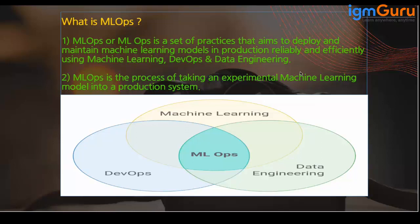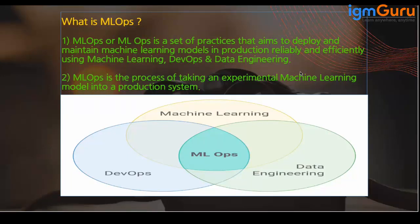MLOps is a combination of machine learning, DevOps, and data engineering, and there should be proper coordination between every team. We should have a culture where everybody understands what each team is doing, with no gap between teams. It should be a continuous process. That is what MLOps is.